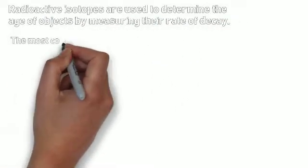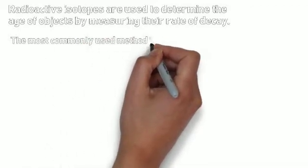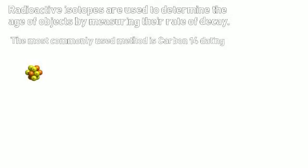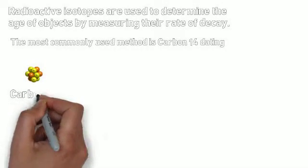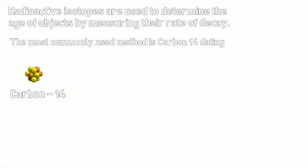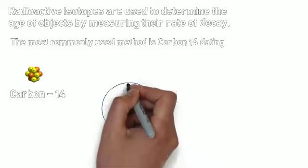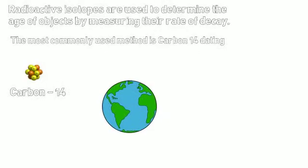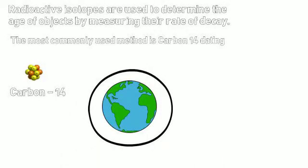The most commonly used method is carbon-14 dating. Now there are other isotopes that are used, but carbon-14 is the most common. Carbon-14 is this nucleus here, which has 8 neutrons, 6 protons, and it's formed in the upper regions of the atmosphere.